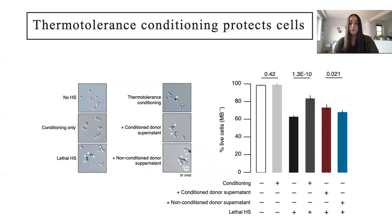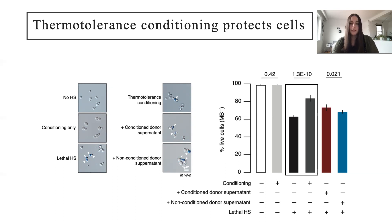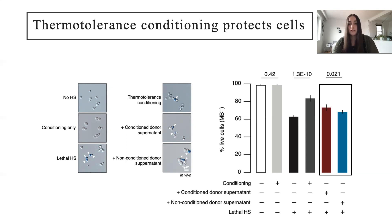This is in fact what we observed. By determining the proportion of live gray cells to dead methylene blue positive cells, I found that cells that underwent thermal tolerance conditioning — the dark gray bar — survive significantly more than naive cells, the black bar. What's more, I found that the supernatant from these conditioned cells also induced increased survival, seen in the burgundy bar. This indicates that something released by cells into the extracellular medium is responsible for this protection against lethal heat stress.